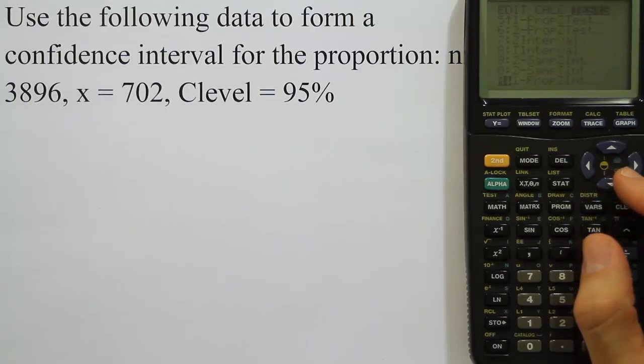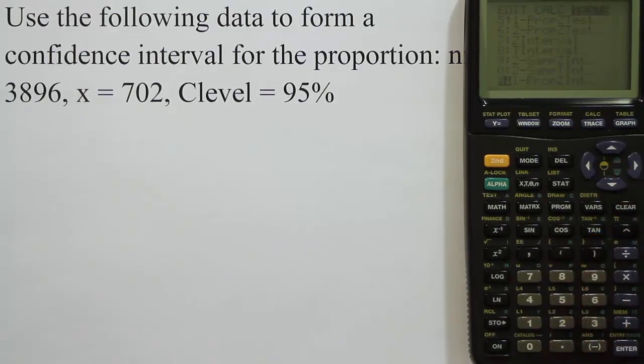So keep going down. It's actually, in my calculator, option A. Depending on your calculator, it might not be the same option. But in my calculator, it's option A. So it's a one proportion z interval that we want. So we hit enter there.